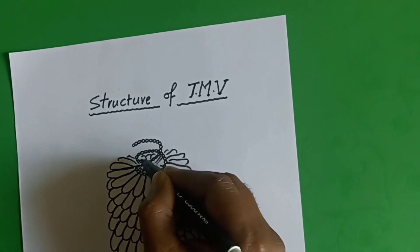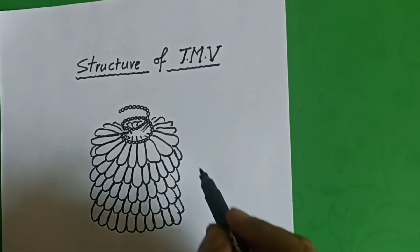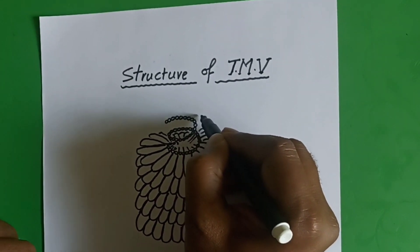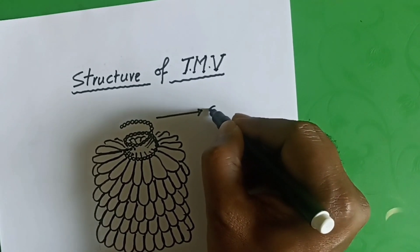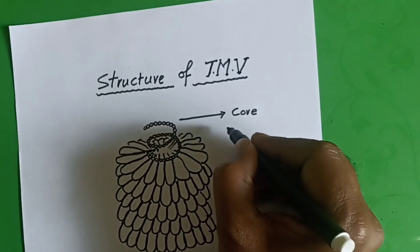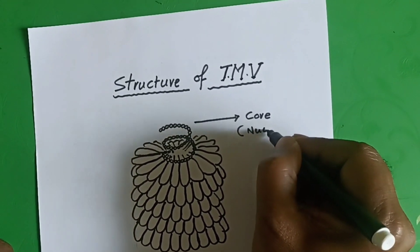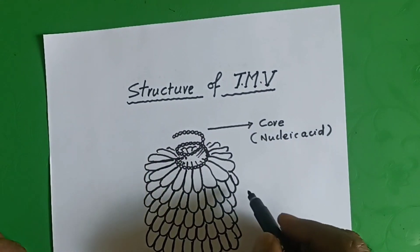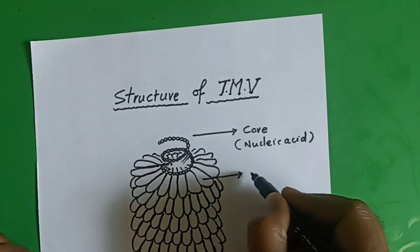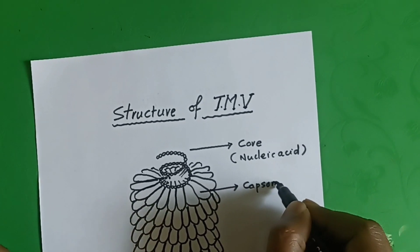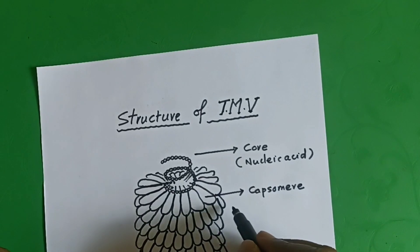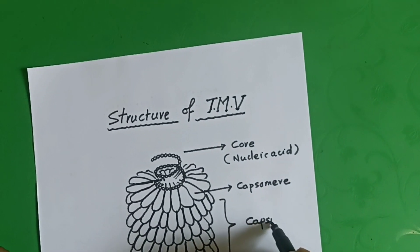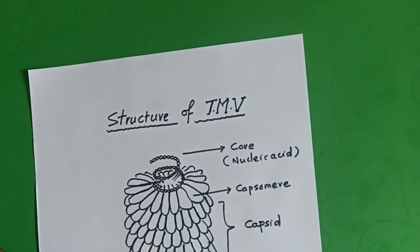Now it's time for labeling. This is the central core — nothing but nucleic acid, single stranded RNA. It is surrounded by so many Capsomeres, which are small units of proteins. All these protein units together are called the Capsid — it is the protective layer of TMB.